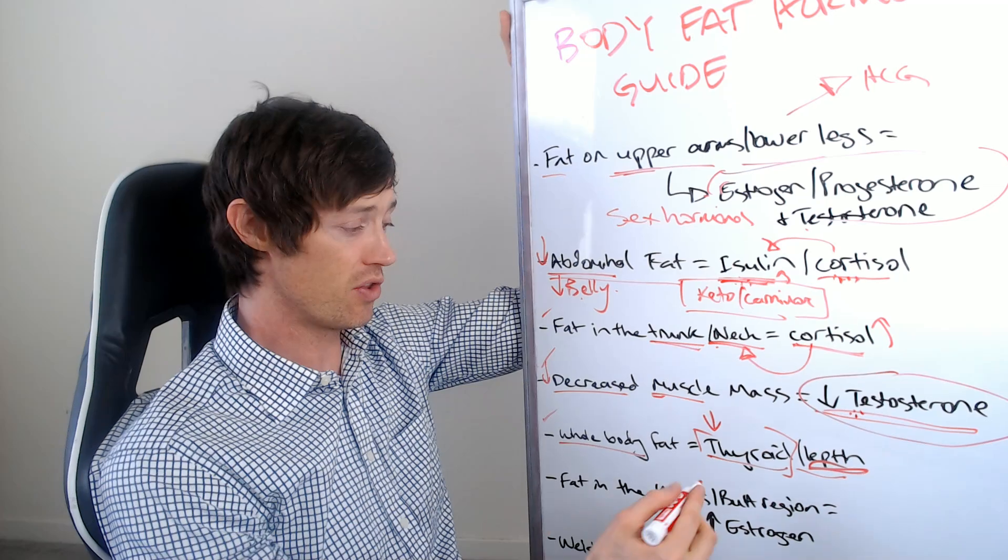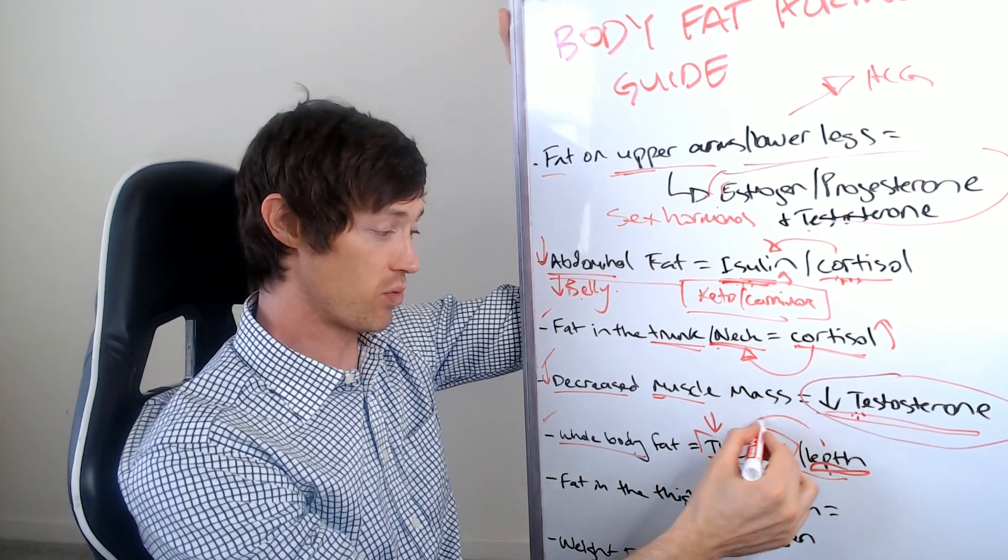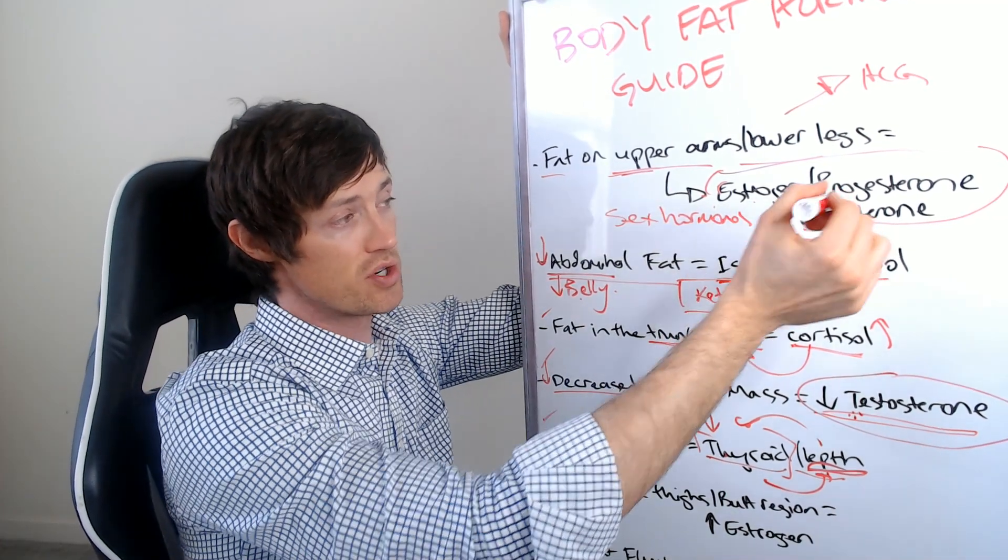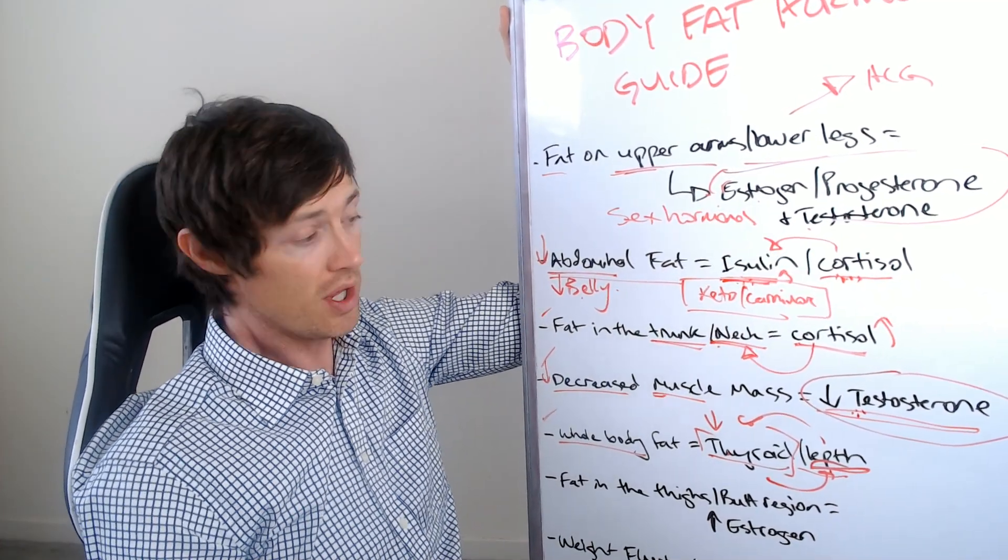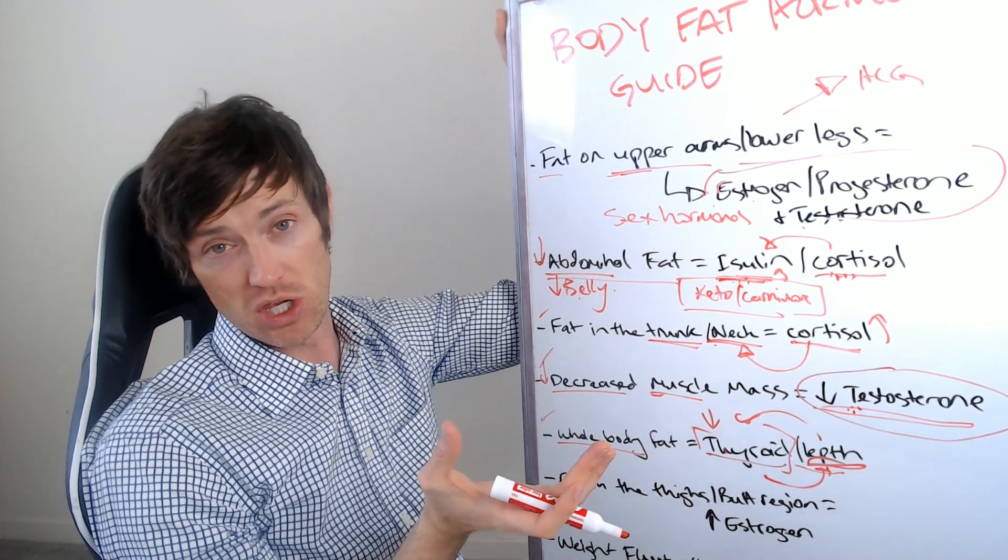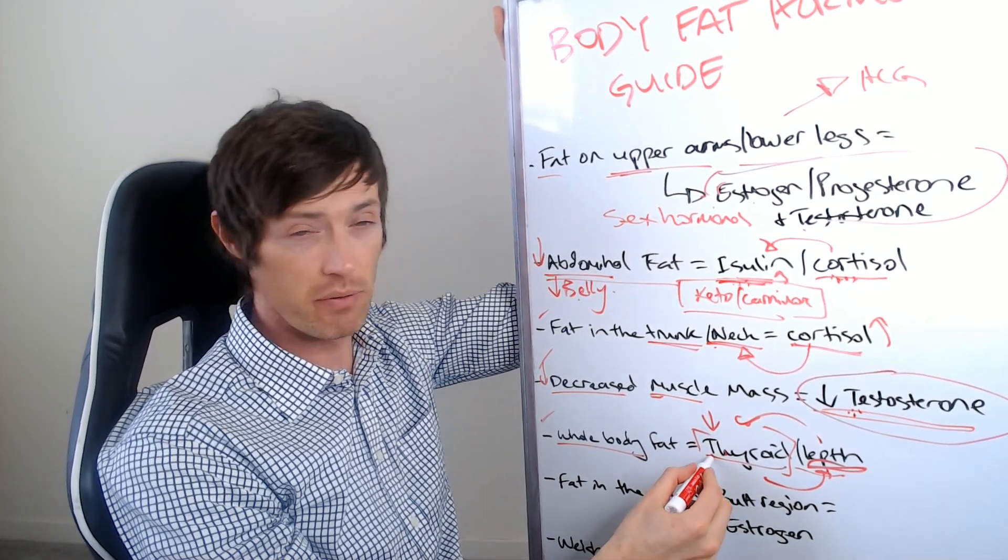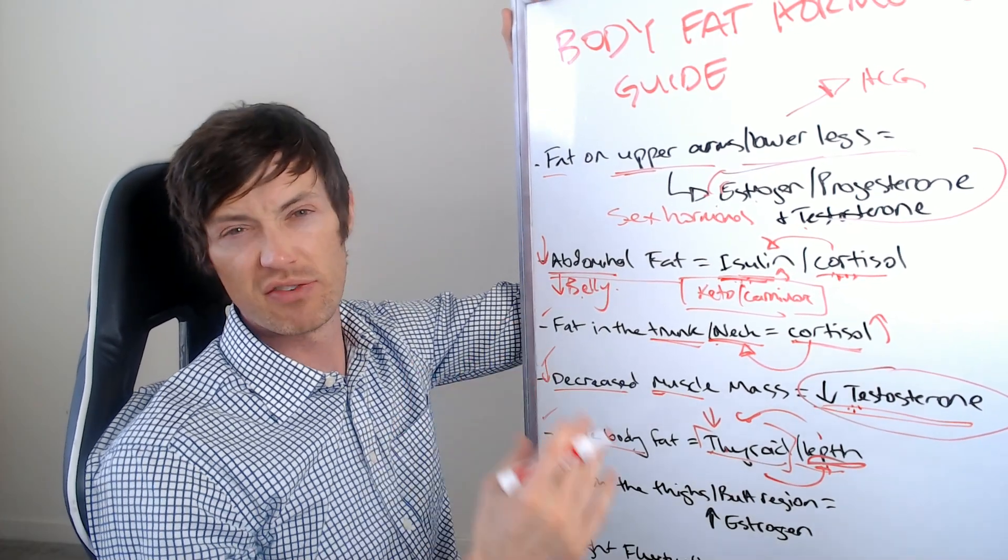I should point out here though, that both of these problems can impact one another. And take, for instance, the thyroid. Thyroid problems can start to give you estrogen, progesterone, and testosterone problems as well. So what may happen, and this might be you, depending on how far along you are in your thyroid disease, you may develop thyroid disease, start to just gain 10, 15 pounds over your whole body.